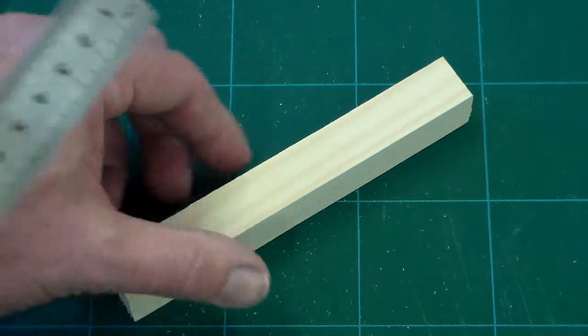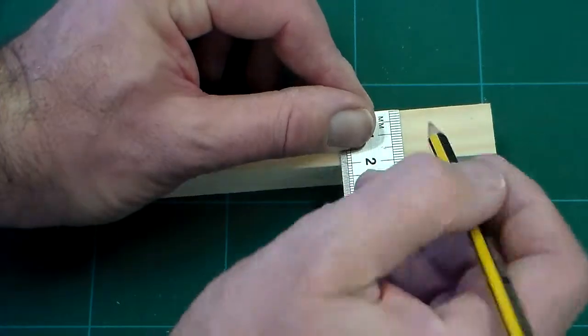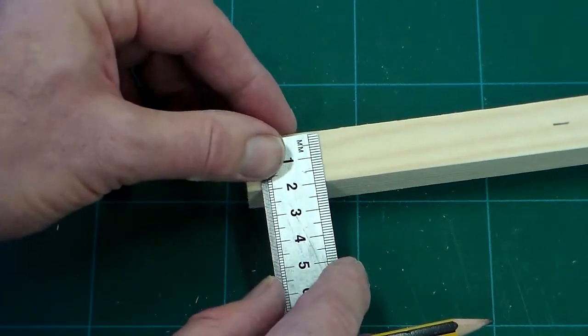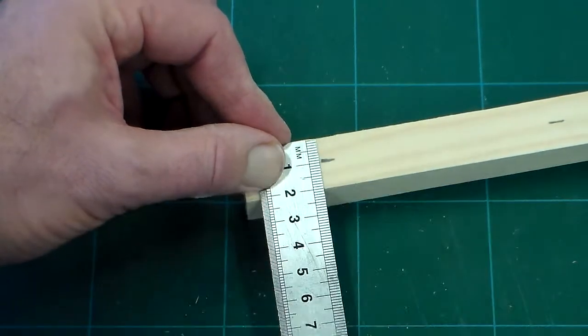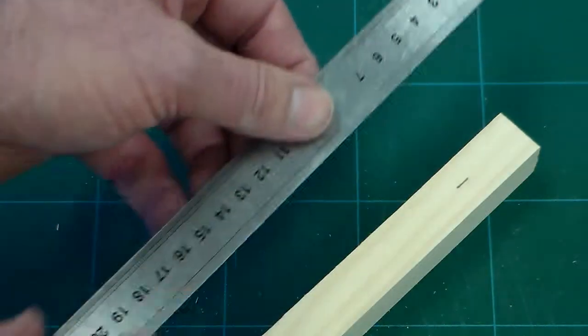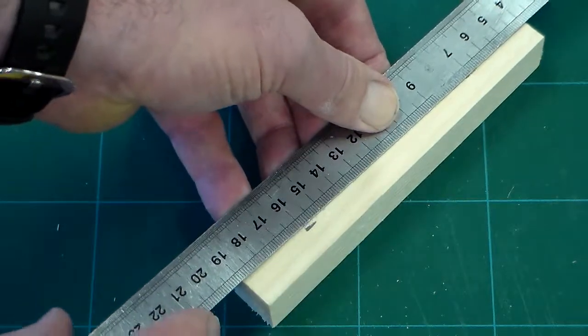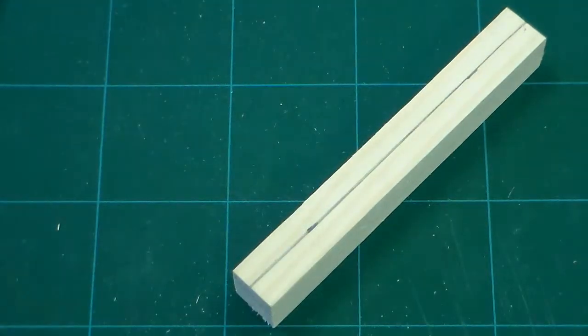We're going to mark the opposite side in the same way. We're going to place the ruler on, mark it at 10mm, move along to the opposite end of the wood and again 10mm. Then we're going to line through again and draw a line through.